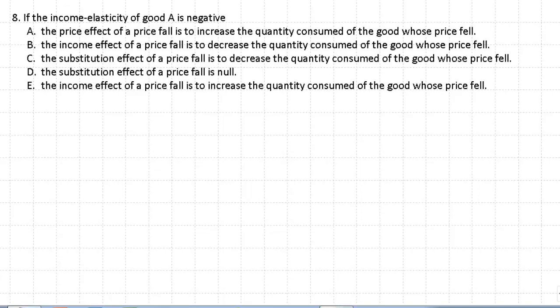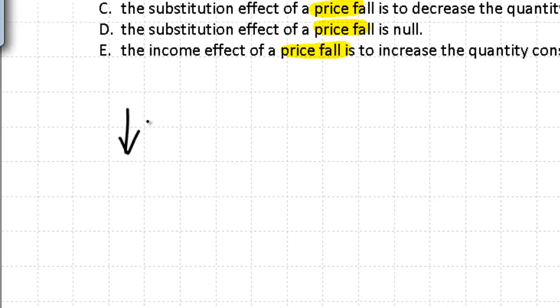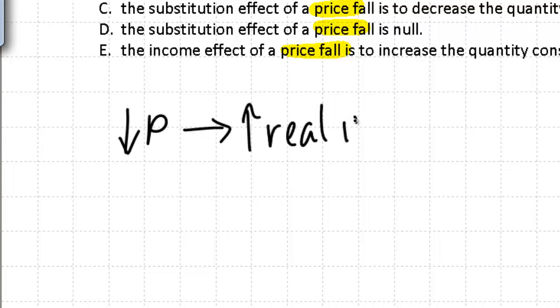Let's take a look at the first one. It's saying if the income elasticity of good A is negative — and all the answers are talking about a price fall. So if we talk about the income elasticity of an item, if the price decreases of an item, what it's going to do is increase that person's real income.